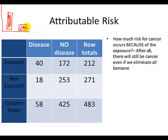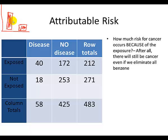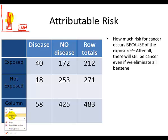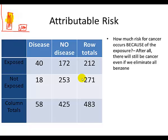What we want to know is how much of the disease is because of benzene. We need to calculate that percentage based on that column of exposed risk. The way we do that is by taking the exposed risk amount, subtracting the unexposed risk amount, and then dividing that by the whole thing.